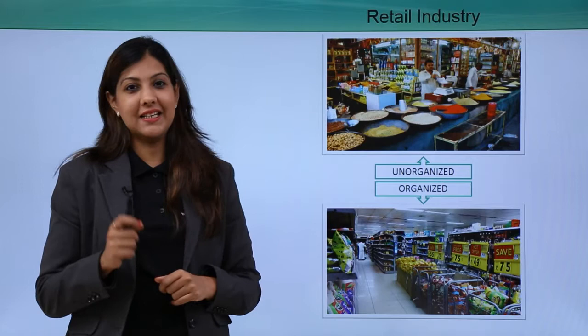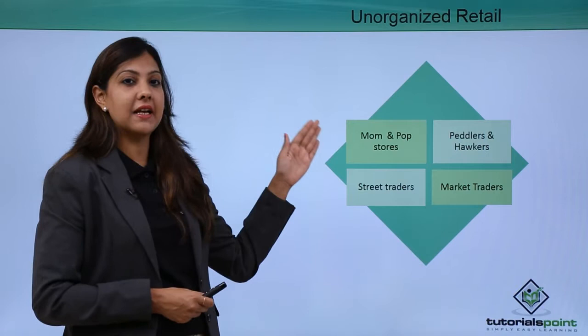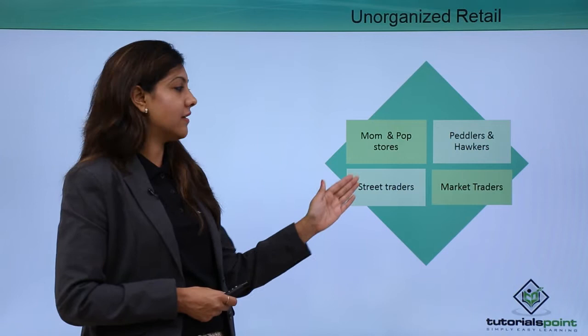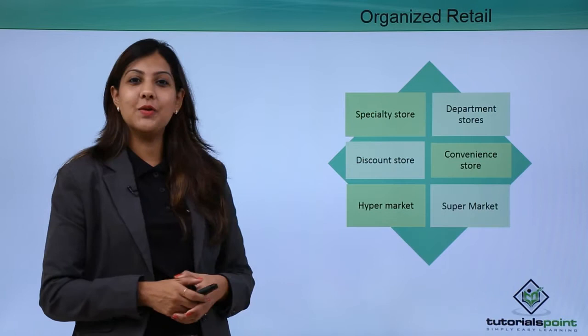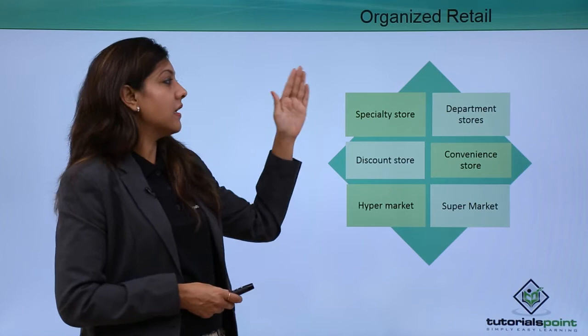Under unorganized retail we have mom-and-pop stores, peddlers, hawkers, street markets, and market traders. These are similar to neighborhood stores or Kirana stores. Under organized retail we have specialty stores, departmental stores, discount stores, convenience stores, hypermarkets, and supermarkets.